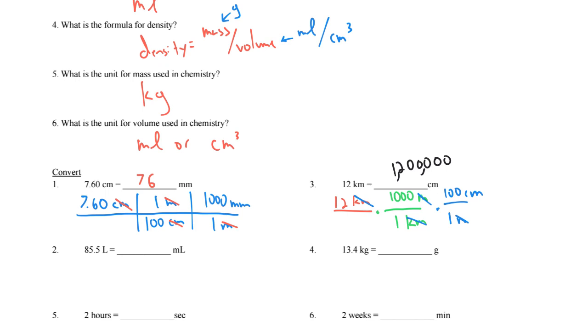On to our next one. 85.5 liters times the fact that in one liter, there's 1,000 milliliters gives us 85,500 milliliters. Kilograms to grams. So in 13.4 kilograms, I know that one kilogram is 1,000 grams. Kilo means 1,000. Kilograms cancel out, and now I've got 13,400 grams.